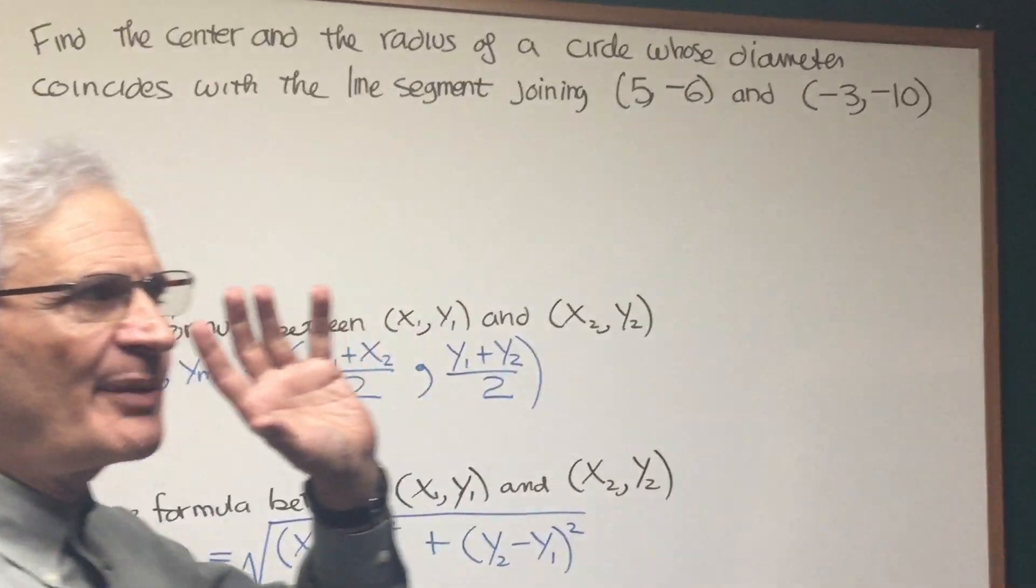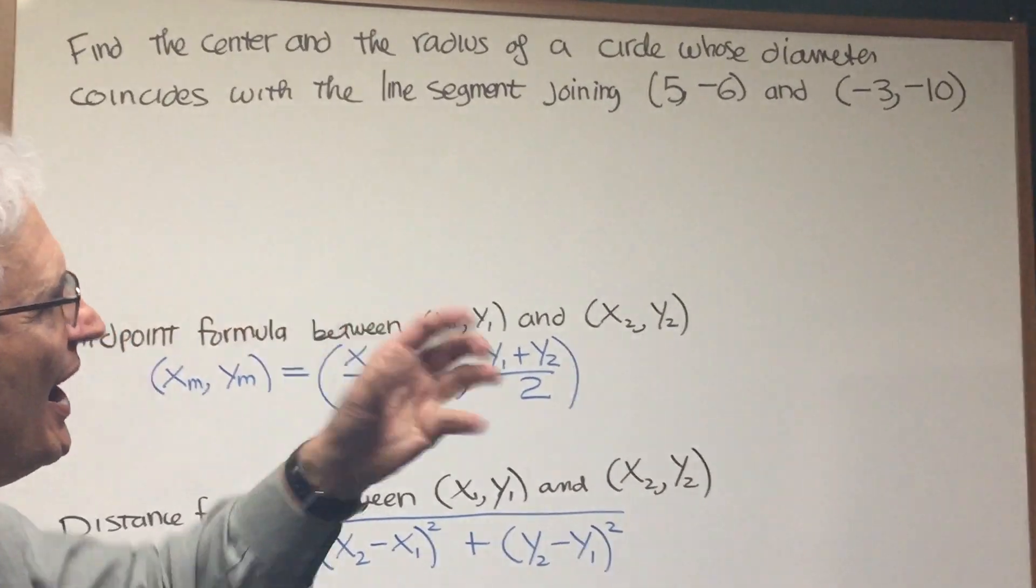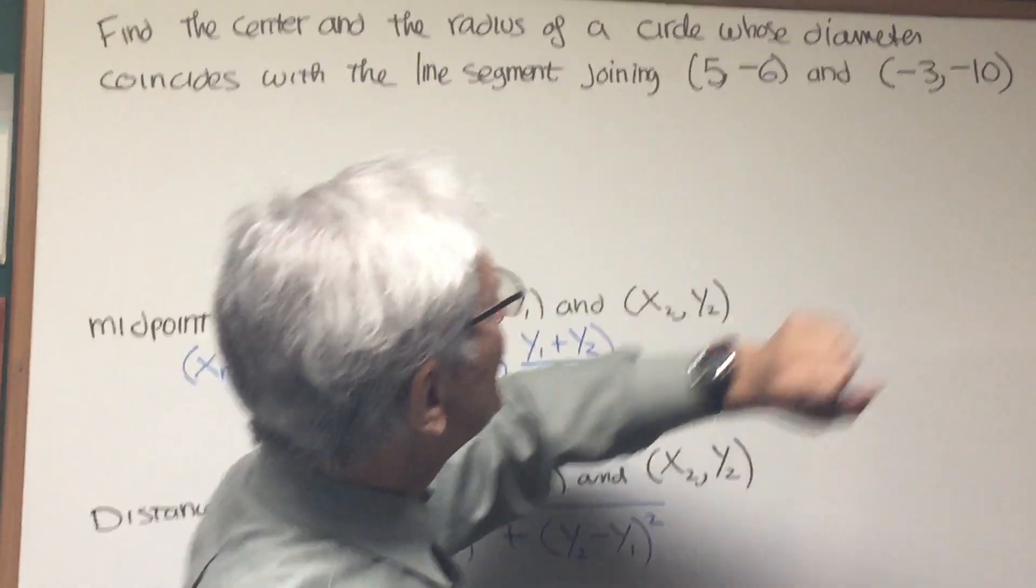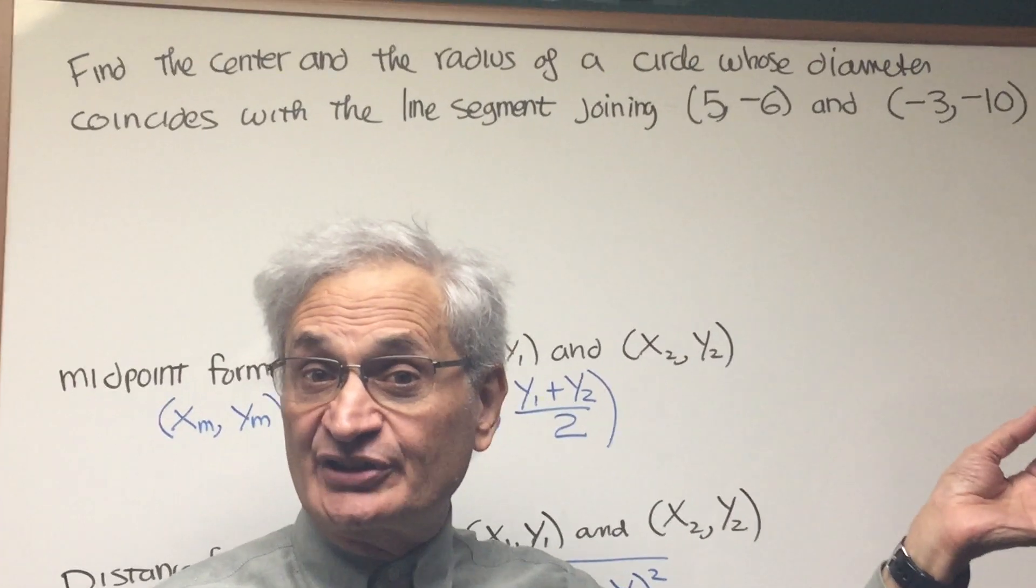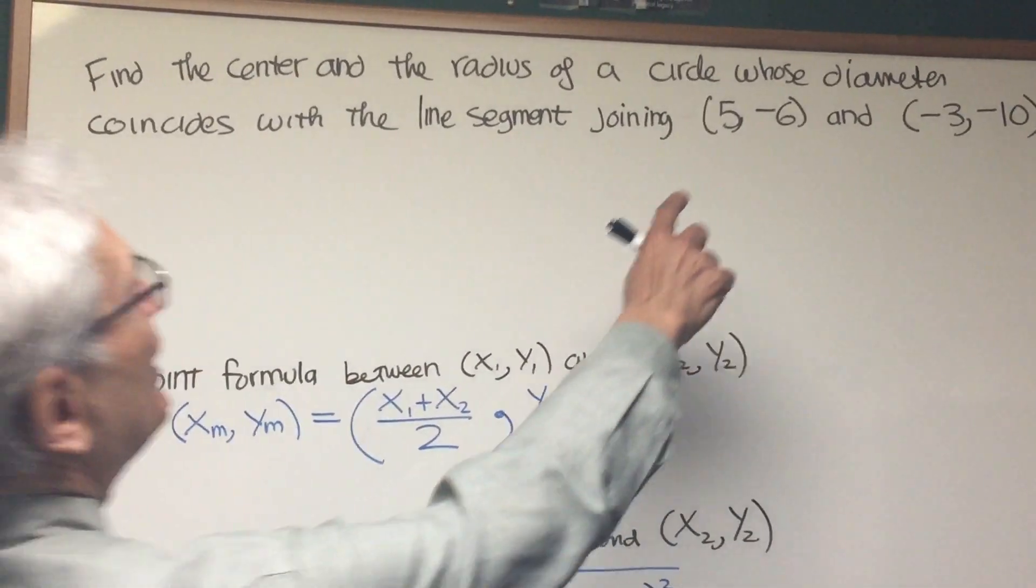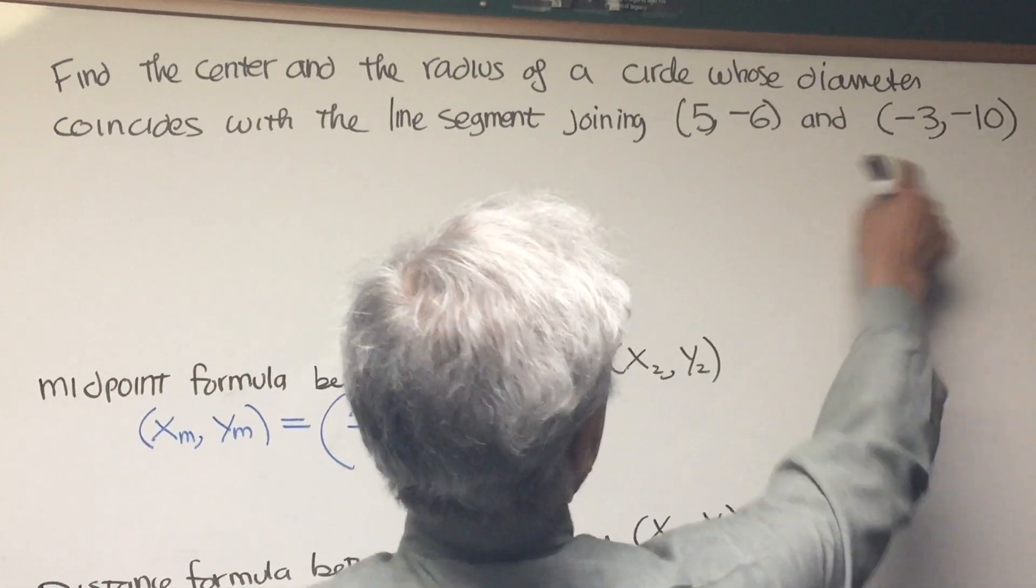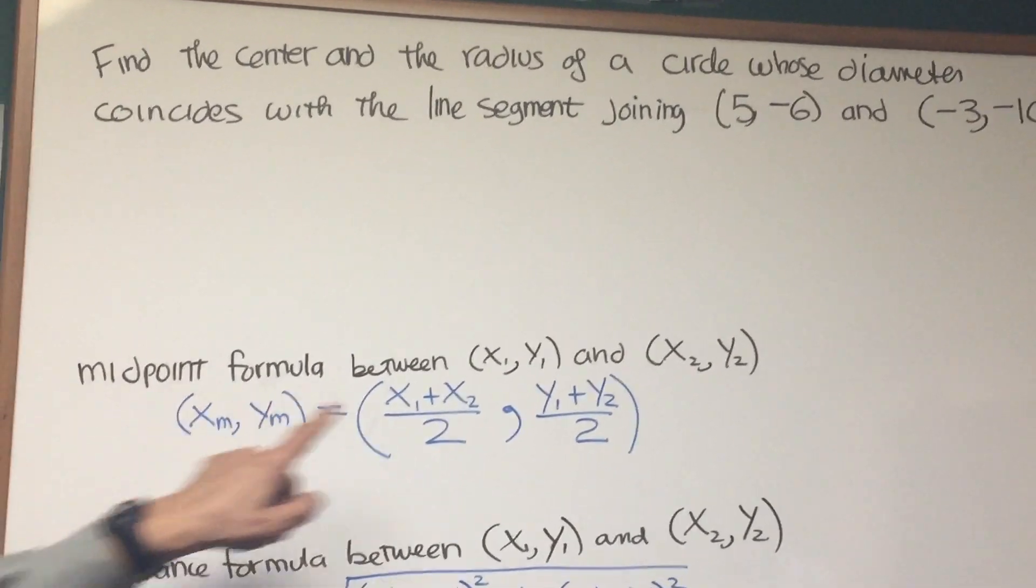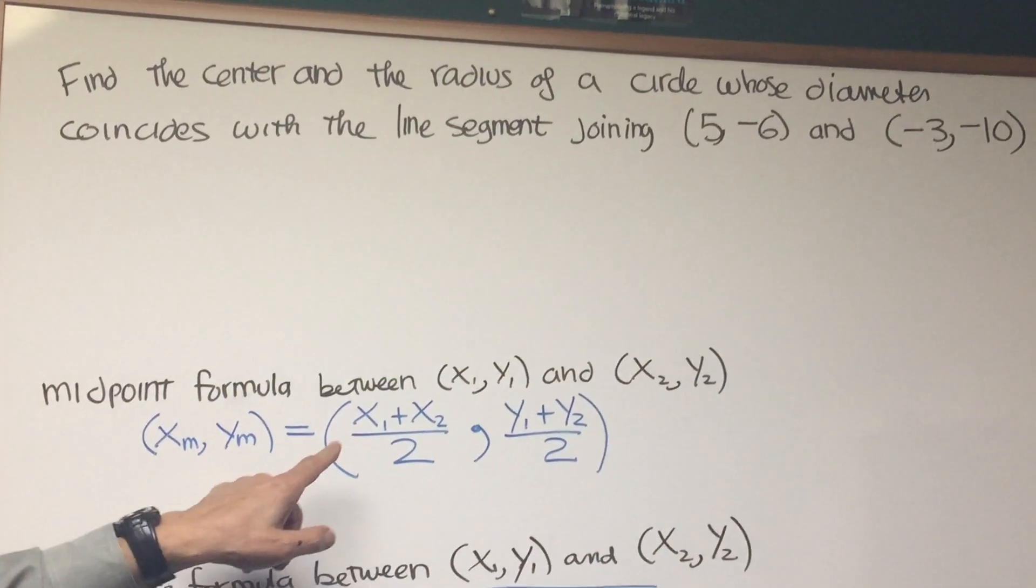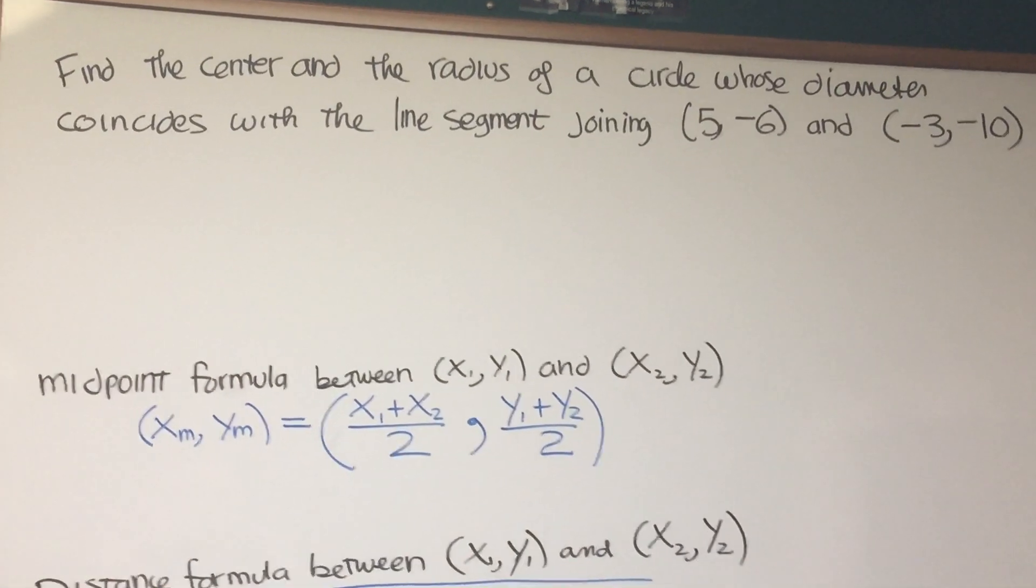Well, you have to approach this problem visually and realize that where is the center of the circle? It's going to be located halfway between the endpoints of the diameter. So what we need to do is apply the midpoint formula to these two endpoints. The midpoint formula for two points, (x₁, y₁) and (x₂, y₂), is simply the average of each of the coordinates.